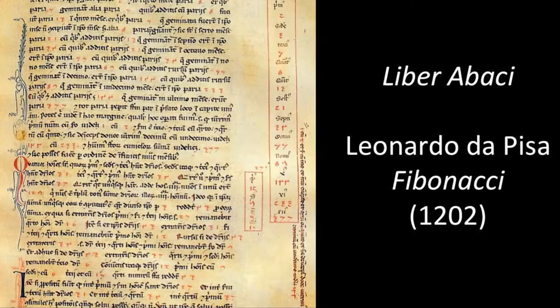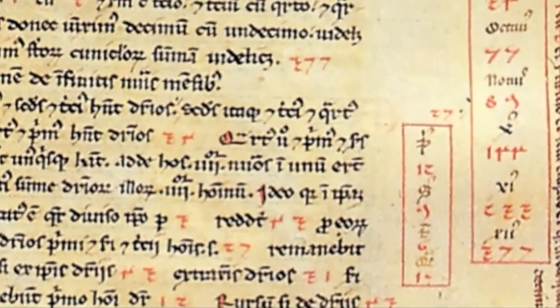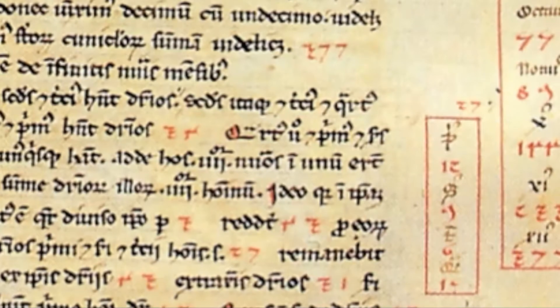The root Abacai is the same as the one for Abacus, the calculating machine, and this translates loosely as book of calculation. This was the book that introduced Indian mathematics to the West. In particular, it introduced what we now know as Arabic numerals. This replaced the Roman numeral system that was then widely used. Part of what Fibonacci did in the book was show how much easier it is to do calculations using numbers in the decimal system where the place where the number is indicates its value.